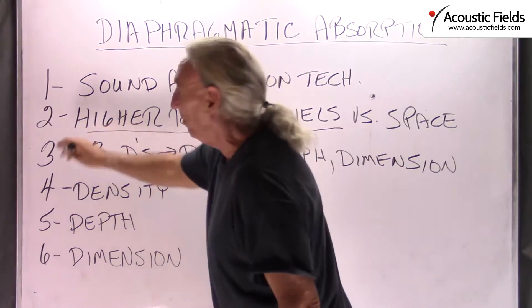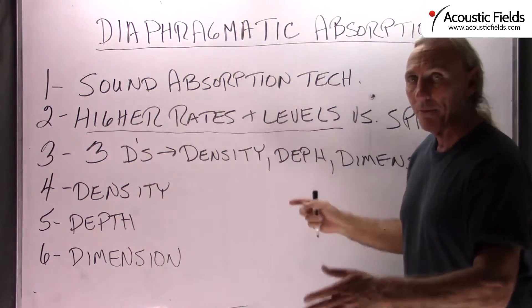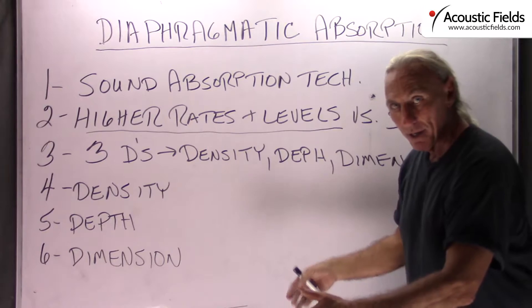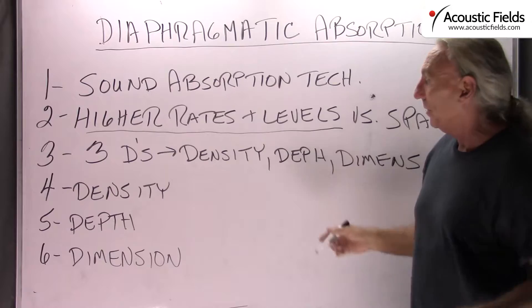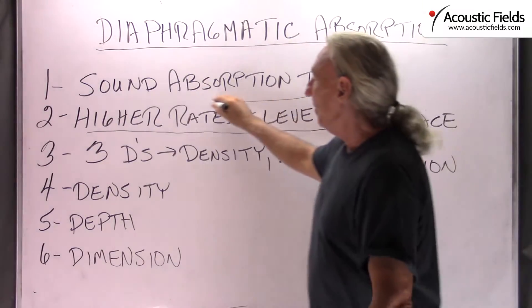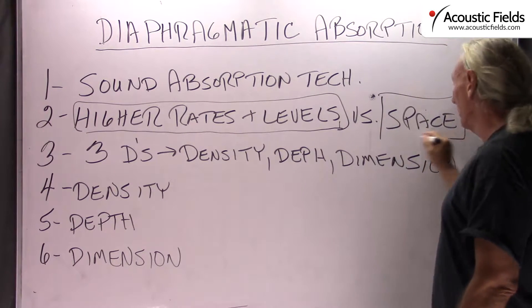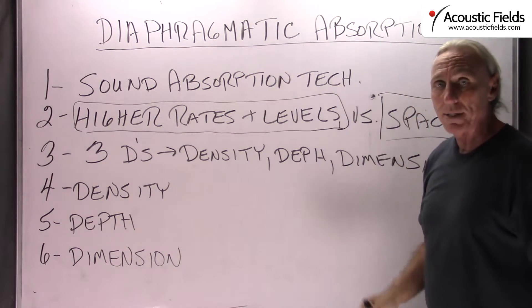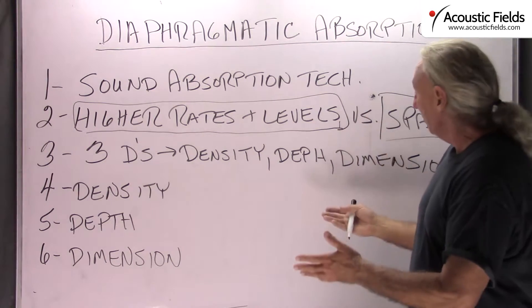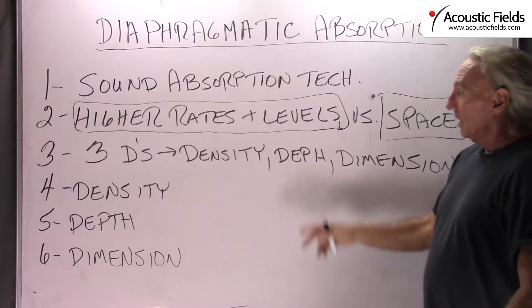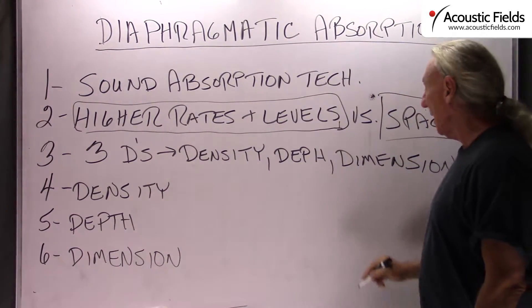Why diaphragmatic absorption? We all have diaphragmatic absorbers in our walls in our house. A diaphragmatic absorber is a cabinet with a back and a front and a hollow space in the middle — that's a diaphragmatic absorber. Why do we like it? Higher rates and levels versus smaller amounts of space. Real estate's expensive, our rooms are smaller, our problems are larger. So we have to figure out ways to absorb a lot of energy in a small amount of space.